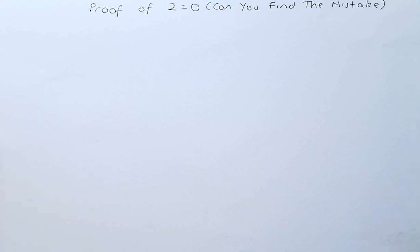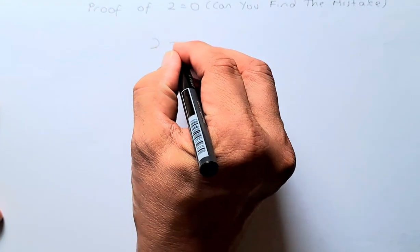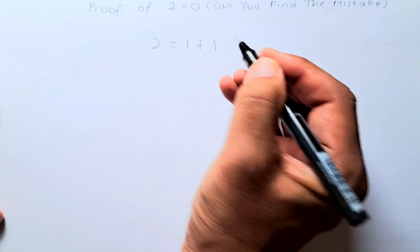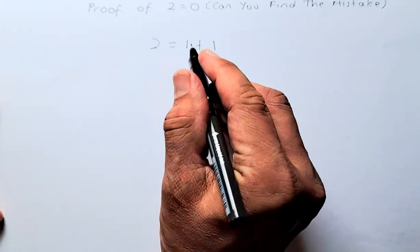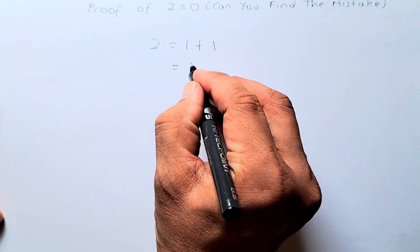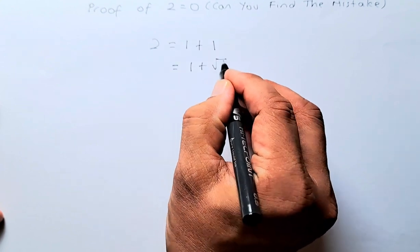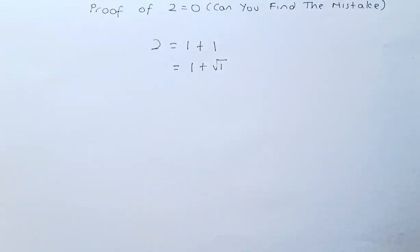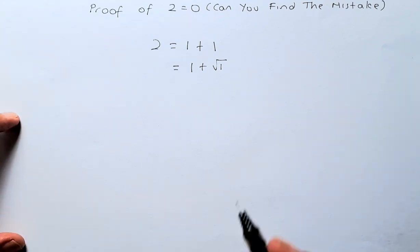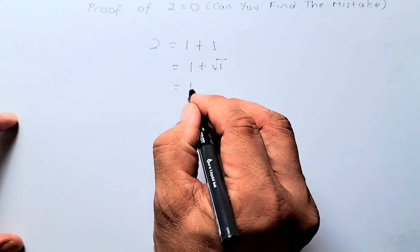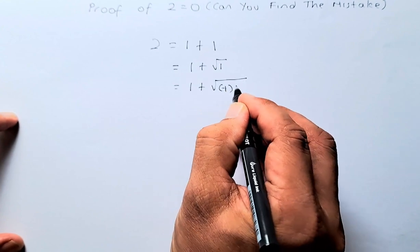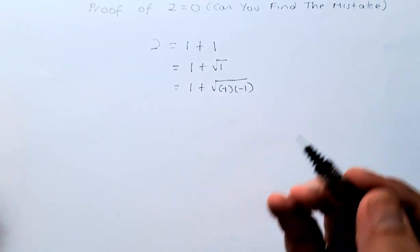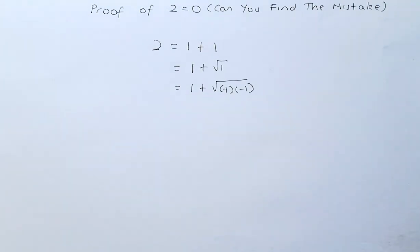They start with 2 is equal to 1 plus 1 — that's not the problem. They also say that 2 is equal to 1 plus square root of 1, which is again not a problem. The next step is that 2 is also equal to 1 plus square root of negative 1 multiplied by negative 1. That is fine.